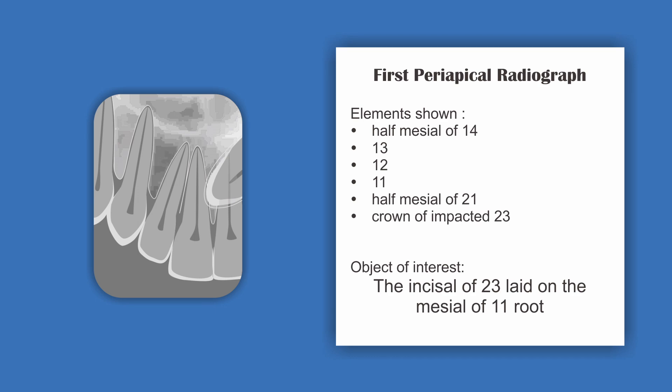Now let's do an exercise. We have a radiograph from a patient as the initial radiograph. We can see the mesial half of the upper right first premolar, canine, lateral incisor, and central incisor, as well as the mesial half of the upper left central incisor and the crown of an impacted upper left canine. Our object of interest is the upper left canine. The first radiograph shows the incisal of the upper left canine lying on the mesial of the upper right central incisor. We need to determine whether the canine is lingually or buccally placed.